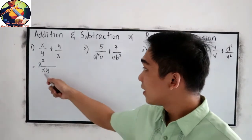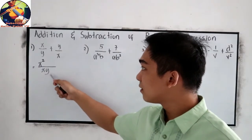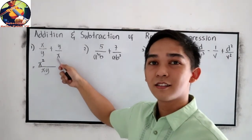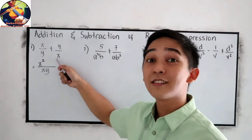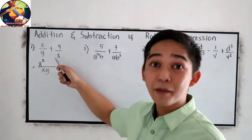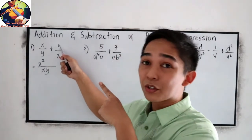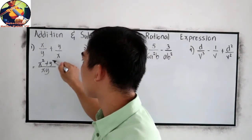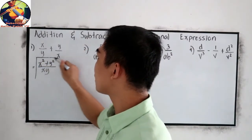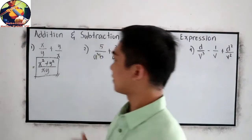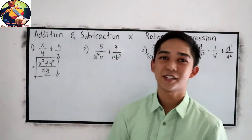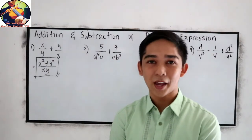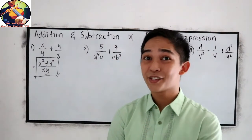Next, x, y divided by x, that is y, times the numerator y, so y times y, that is y squared. So this will be our answer, x squared plus y squared all over x, y, easy, right?